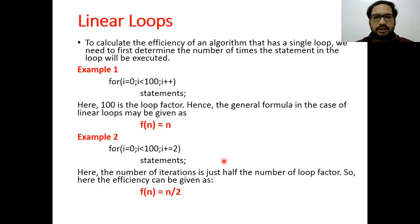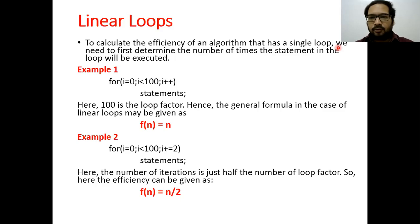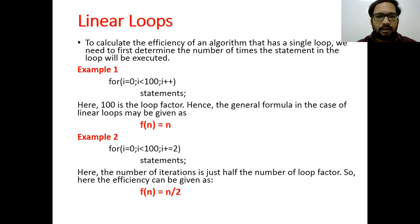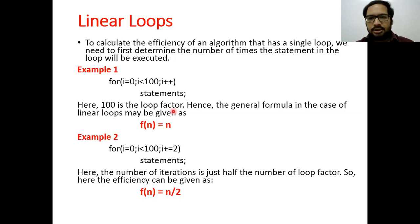The first case is linear loops. To calculate the efficiency of an algorithm that has a single loop, we need to determine the number of times the statements in the loop will be executed. In this example, the loop will repeat 100 times and the statements will be executed 100 times. So here 100 is the loop factor. Hence the general formula for linear loops can be given as f(n) = n.